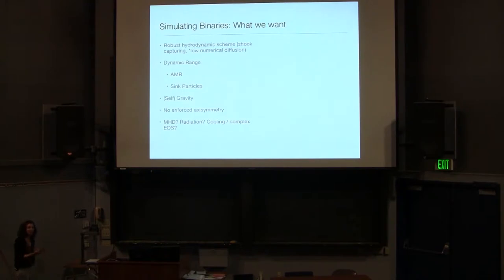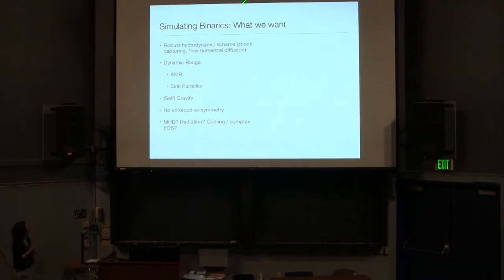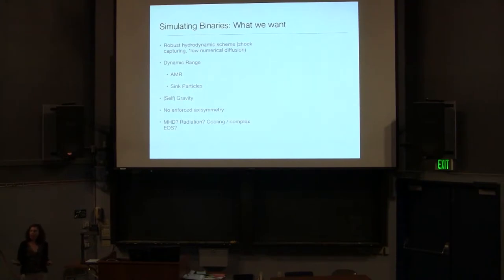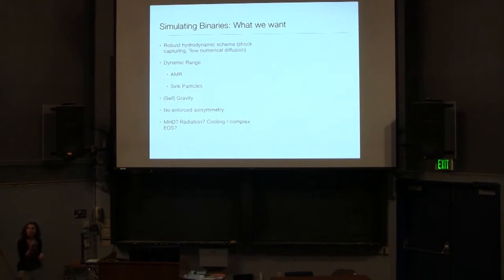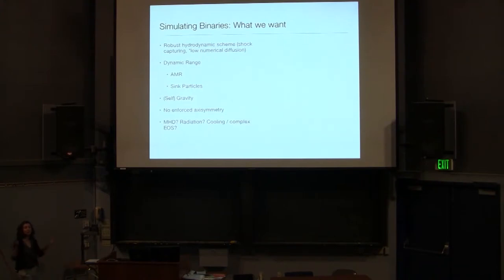We have to keep in mind that a protostellar disk is going to be rapidly moving across our grid boundary, and various methods have tried to account for this. We also need dynamic range in binary problems — spatially, which we can get with AMR, and in terms of mass. We need to be able to resolve both the stars and the background gas, and one of the common techniques to do this is sink particles, where we give up on spatial resolution and instead put in a point mass that interacts with the flow gravitationally but doesn't properly interact hydrodynamically. This is really one of the only ways computationally that we can simulate both a cloud and a star at the same time. We also want to include gravity, and in many cases self-gravity.